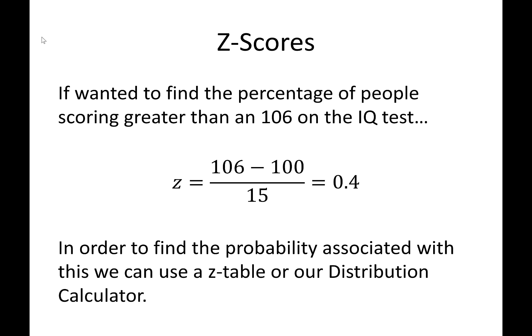And so if we wanted to find the percentage of people scoring higher than a 106 or scoring higher than a z-score of 0.4, what we would need to use to find that is a z-table or a distribution calculator. Now, if you've taken a statistics class before, probably in high school, you use what's called a z-table.